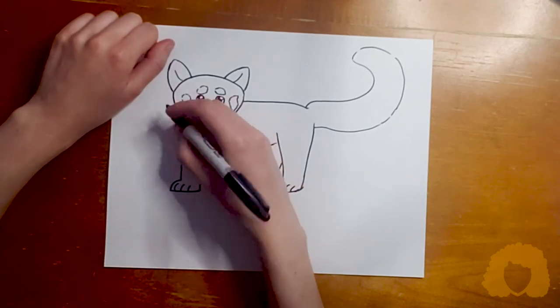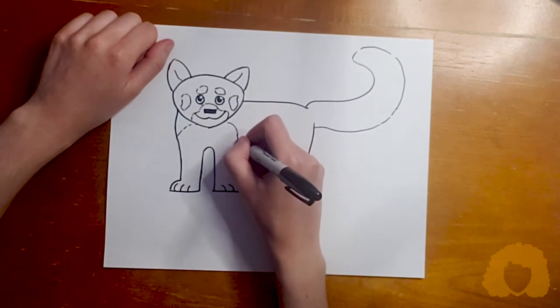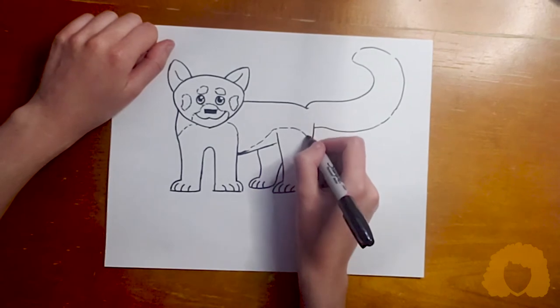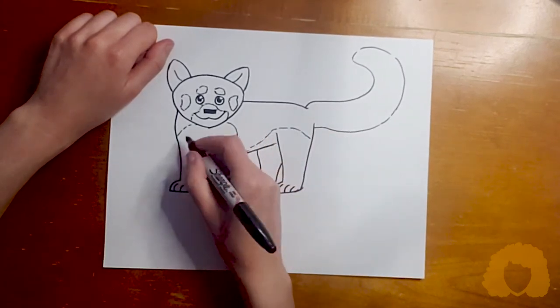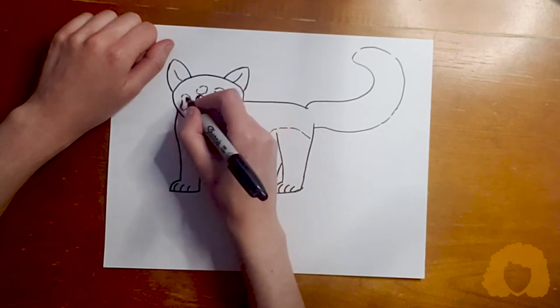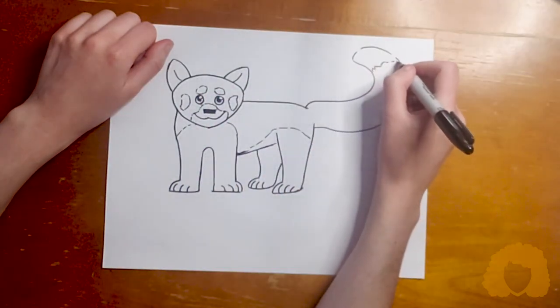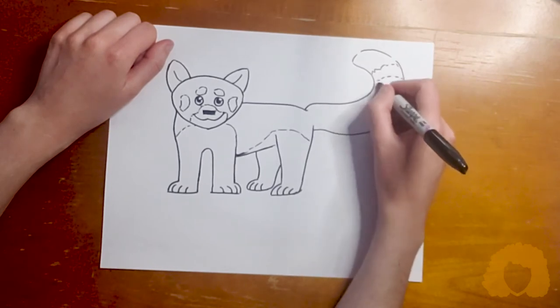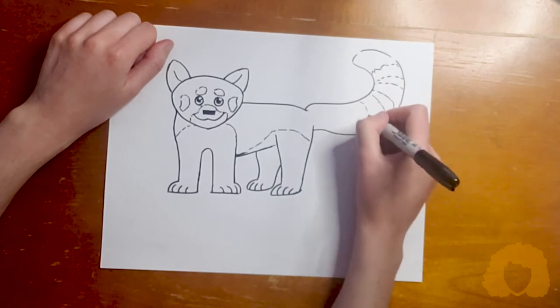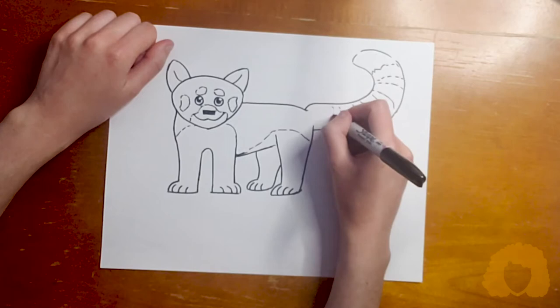And then before I begin coloring, I'm going to mark out his markings just so that they're clear when I begin coloring. His legs are, or her legs, are going to be very dark black, while the body's going to be orange with the white markings and the white ears. And then the tail is going to be tipped black with orange stripes, dark orange stripes across the tail. And again, you don't have to draw these out, I just like to do so in this case just to make it very clear.